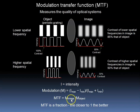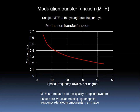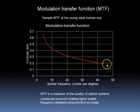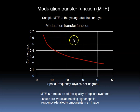Here we see the modulation transfer function of the young adult human eye. We see that the contrast ratio is better for lower spatial frequencies than for higher spatial frequencies, and we can plot a curve. The higher this curve is across all spatial frequencies, the better will be the overall modulation transfer function.